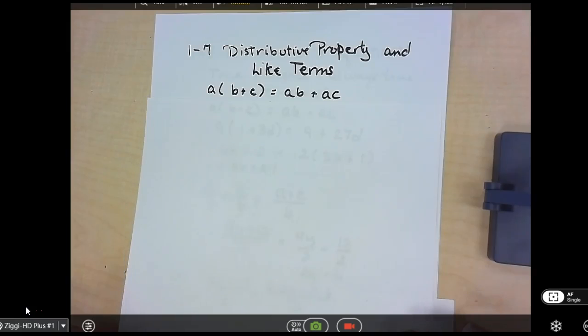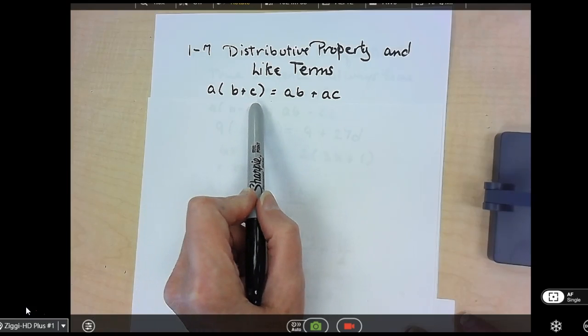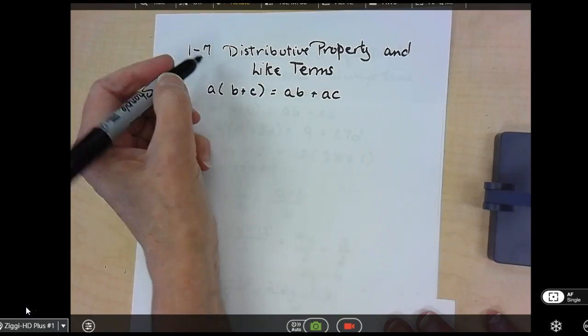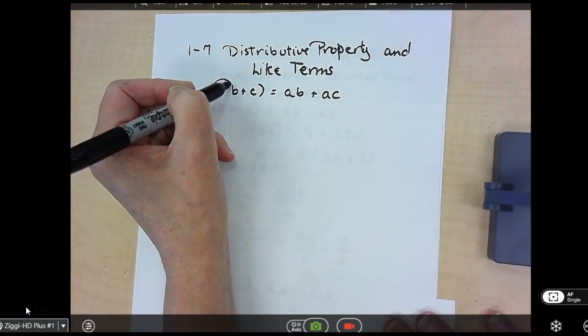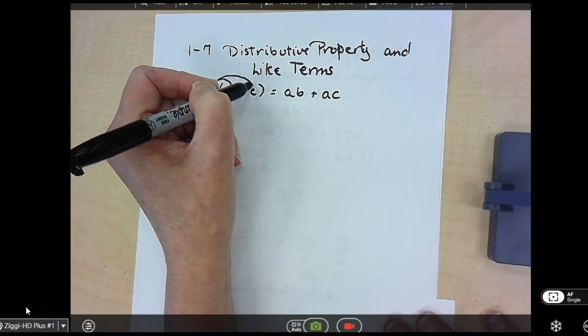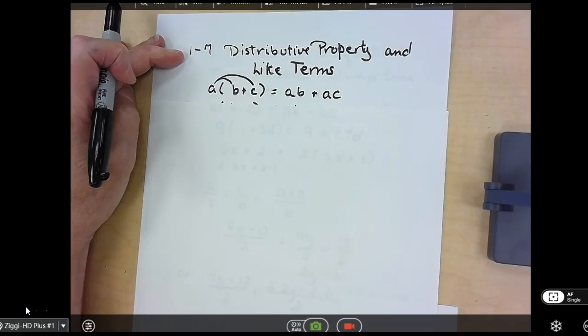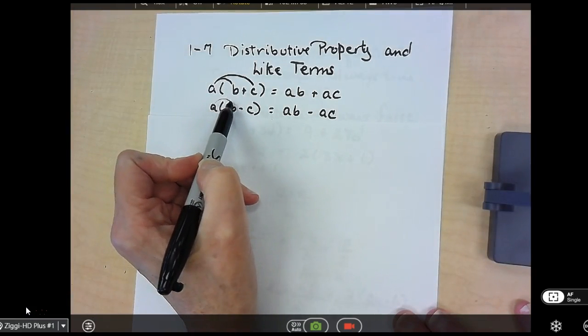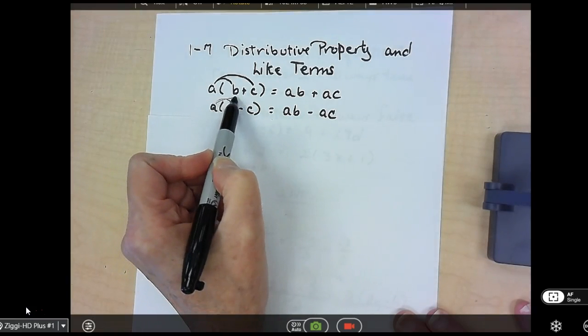So distributive property says if you have A times the quantity of B plus C, you have to take that A and distribute it. So if you're handing money to your friends, you give it to everybody. So A times B and A times C. That's what you end up with. If there's a subtraction sign in there, you would still take A times B, which is AB, minus, and then your A times C.